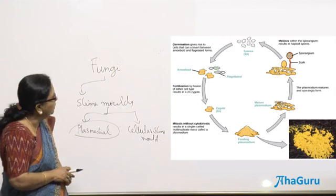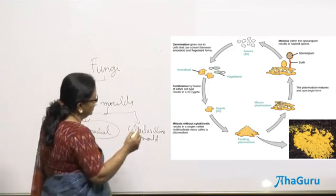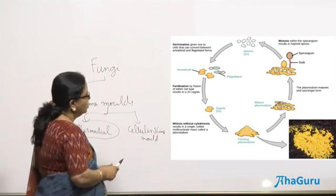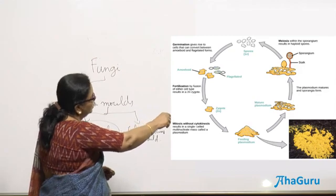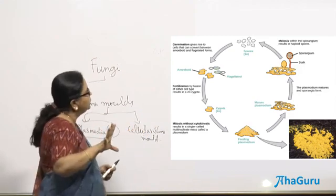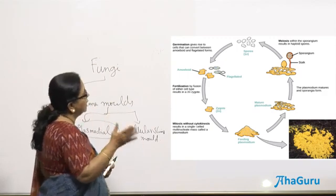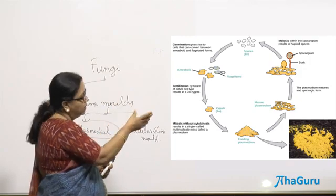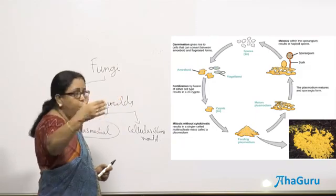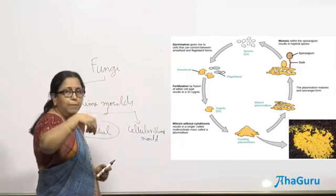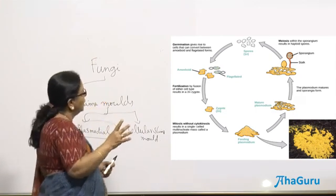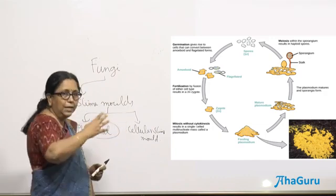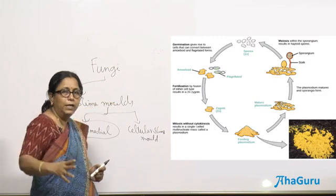Looking at its life history: the feeding plasmodium moves and feeds on dead leaves. Once it matures, it produces sporangia. Inside the sporangia, meiosis happens, resulting in haploid spores. Those spores actually have two forms — one form is flagellated, and another form is amoeboid without flagella. Both kinds of spores are produced, and then they fuse, resulting in a zygote. That zygote divides and forms a multinucleate plasmodium.